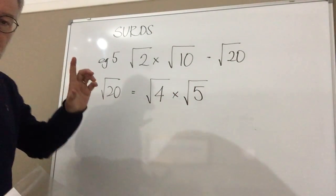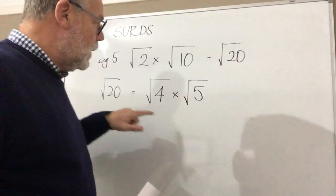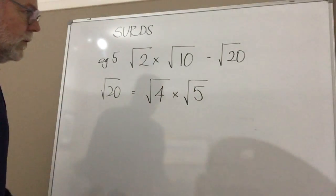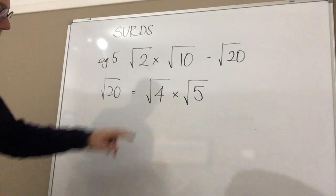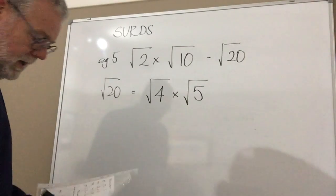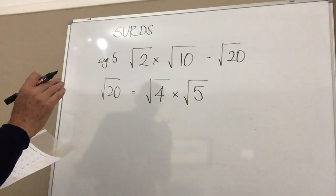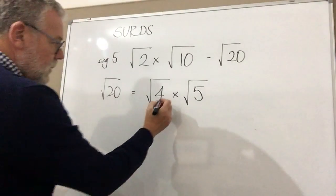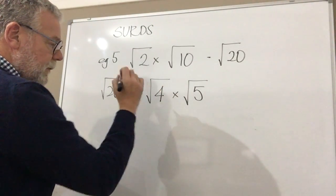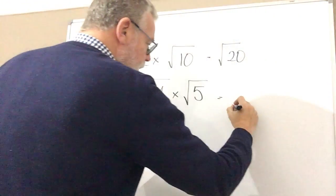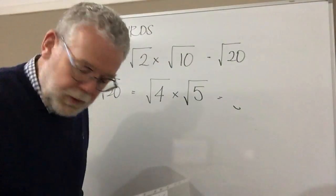Now why have I written it like that? Because I'm looking for a square number. Now in 20, 4 multiplied by 5, 4 we know is a square number. So actually when we simplify it, what we do, we work out the square root of 4 which is 2.